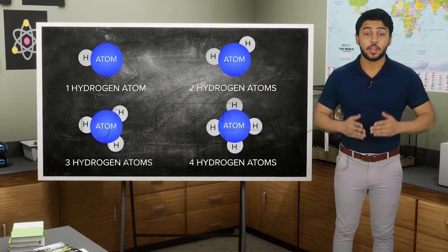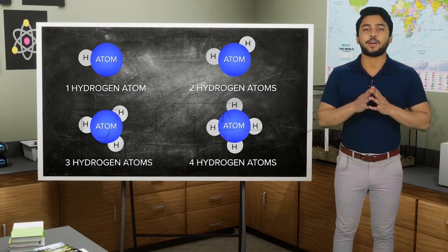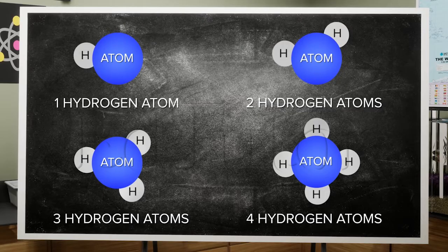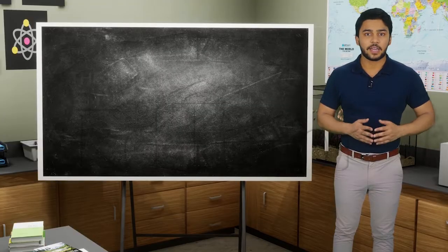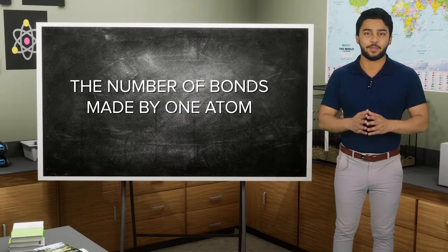In covalent compounds, you'd see valency as the number of hydrogen atoms combining with a single atom of a particular element, or you can say it's the number of bonds made by one atom of the element.